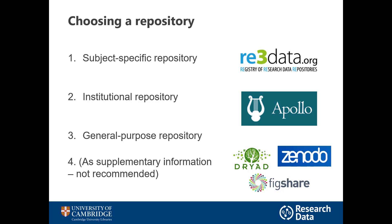The first question you might have is, how do I choose one? There are quite a lot of repositories out there. Your first port of call should be a subject-specific repository. This is somewhere that is usually fairly well known in your field. You might have heard colleagues sharing data there, or you might have used data from the repository yourself. If you're not quite sure, you can look at a list on re3data.org which can be filtered by disciplines and that could give you some ideas to start researching.